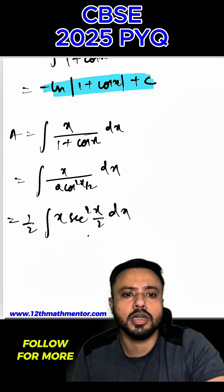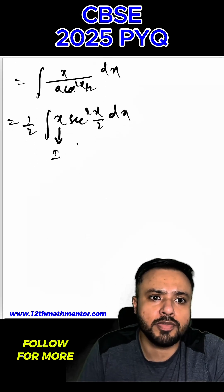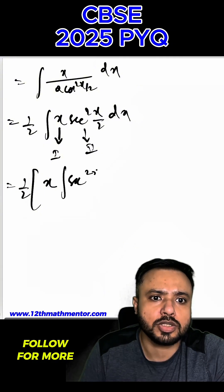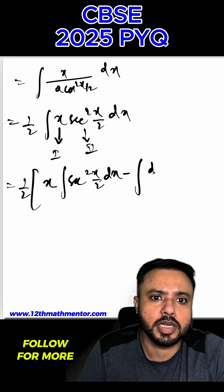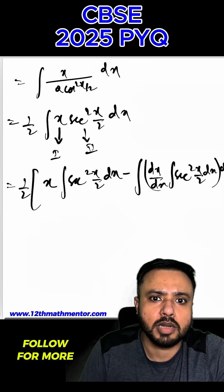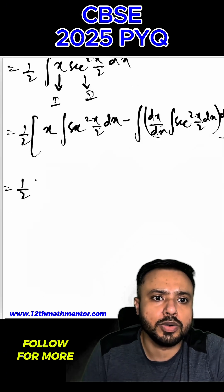Now we will solve this integral using integration by parts. According to ILATE rule, this is my first function and this is my second function. So it will be 1 by 2 x into integral of sec square x by 2 dx minus integral of dx by dx into integral of sec square x by 2 dx, the whole thing in brackets.